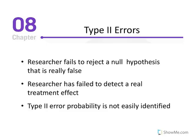The second type of error that is possible is referred to as a type 2 error. In this case, the researcher fails to reject a null hypothesis that is really false. The researcher failed to detect any real treatment effect.